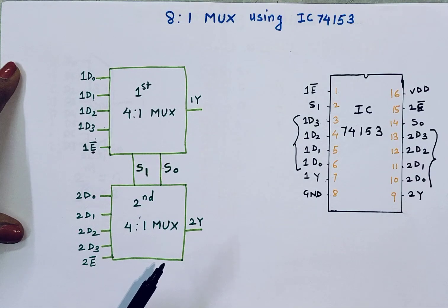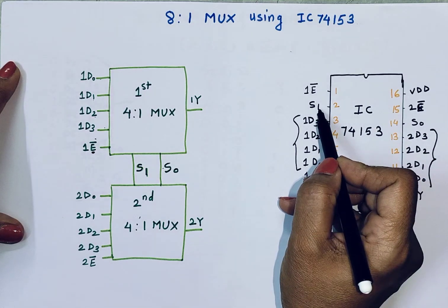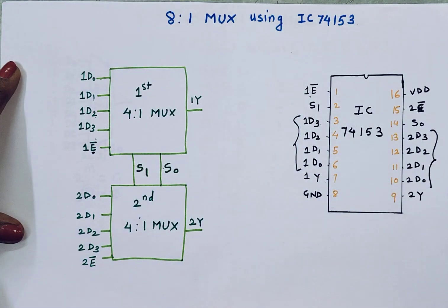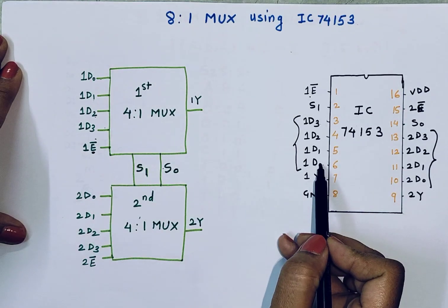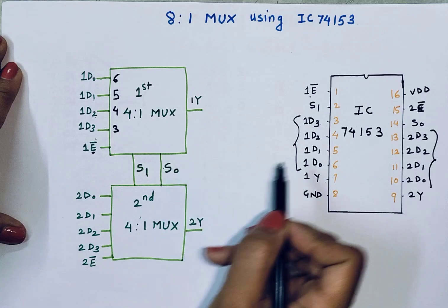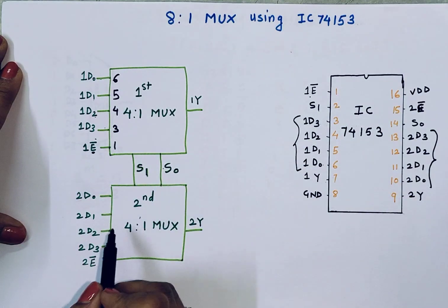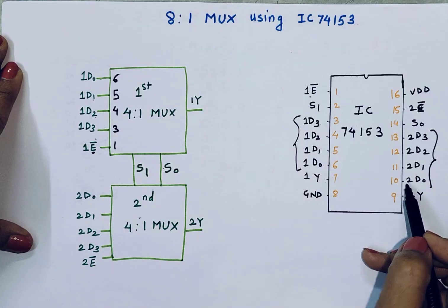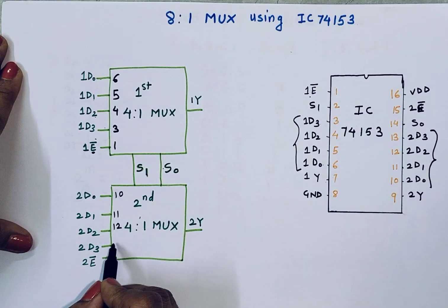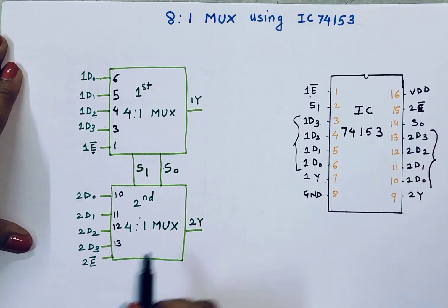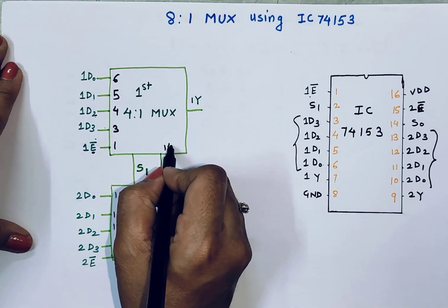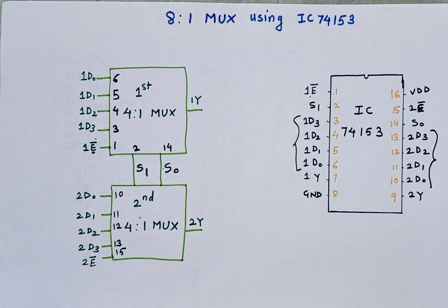The pin assignments are: 1D0 is pin 6, 1D1 is pin 5, 1D2 is pin 4, 1D3 is pin 3, enable of first MUX is pin 1. For the second MUX: 2D0 is pin 10, 2D1 is pin 11, 2D2 is pin 12, 2D3 is pin 13, enable of second MUX is pin 15, S0 is pin 14, and S1 is pin 2.